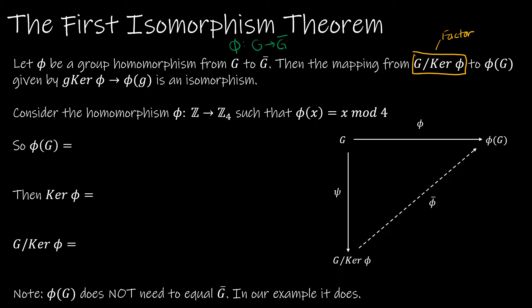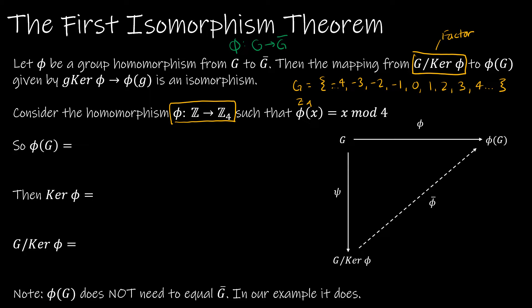We're basically saying those two smaller groups are going to be isomorphic to one another. So let's look at the example where phi maps Z to Z₄. G in this case is the integers: ..., -4, -3, -2, -1, 0, 1, 2, 3, 4, and so on. We're going to map that group to Z₄, which is G bar — that's {0, 1, 2, 3}. The mapping phi is given by phi(x) = x mod 4.